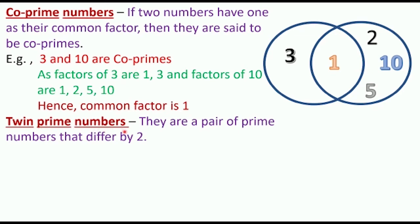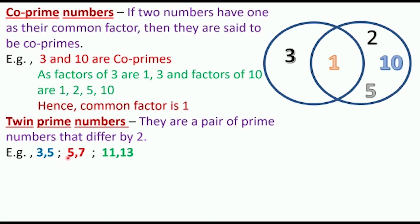Now, what are twin prime numbers? They are a pair of prime numbers that differ by 2. For example: 3 and 5, 5 and 7, 11 and 13. Here 3 and 5 are both prime numbers. Prime numbers are numbers that have only 1 and the number itself as factors.